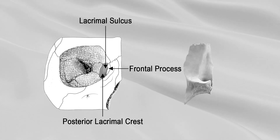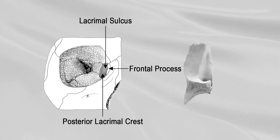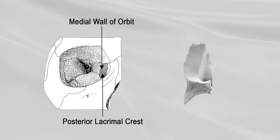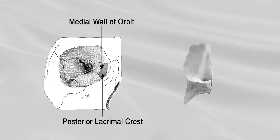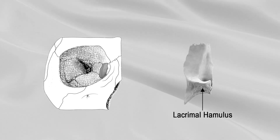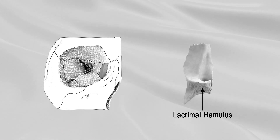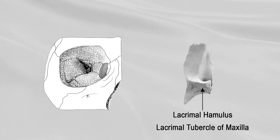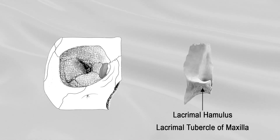The portion behind the crest is smooth and forms part of the medial wall of the orbit. The crest ends below in a small, hook-like projection, the lacrimal hamulus, which articulates with the lacrimal tubercle of the maxilla and completes the upper orifice of the lacrimal canal.